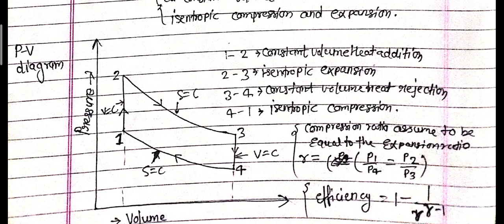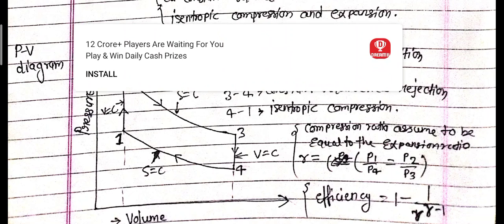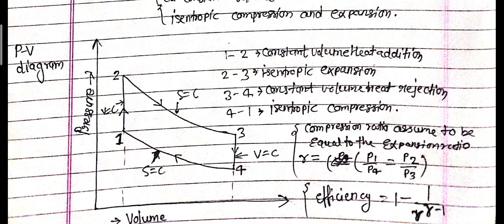Process 4 to 1 is isentropic compression. In the PV diagram, heat addition and rejection both occur at constant volume, and the compression ratio equals the expansion ratio. The compression ratio r = P1/P4 = P2/P3. Efficiency is calculated as: η = 1 - 1/r^(γ-1), where γ is the ratio of specific heats, Cp/Cv.